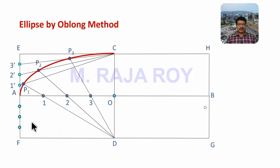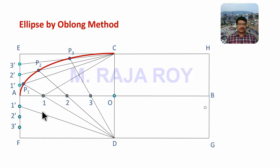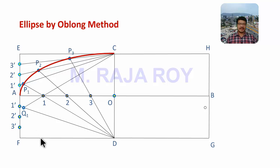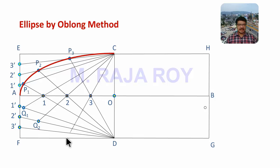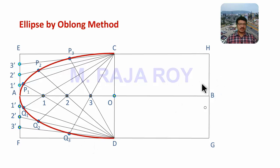Divide AF into 4 equal parts. Since A is the origin, you get numbers in increasing order: 1 dash, 2 dash, 3 dash. Draw a line joining D1 dash, then draw a line joining C1 and extend it — you will get point Q1. Draw a line joining D2 dash, then from C2 draw a line and extend it to touch D2 dash — this point is Q2. Draw a line joining D3 dash, then from C3 extend it to this line — this is Q3. Draw a smooth curve through all these points and one half of the ellipse is completed.